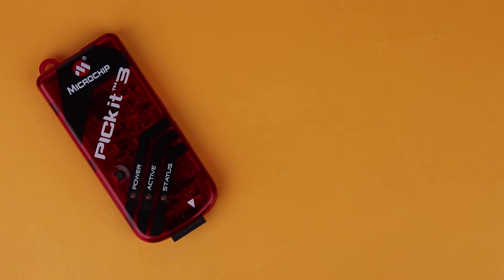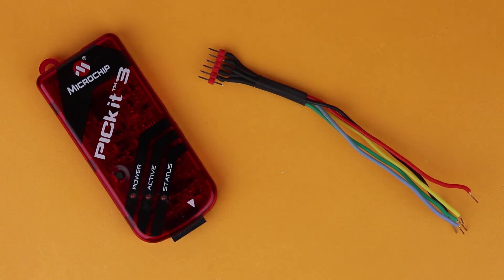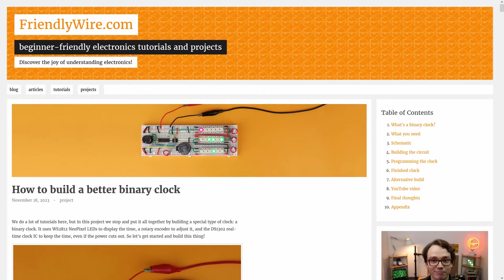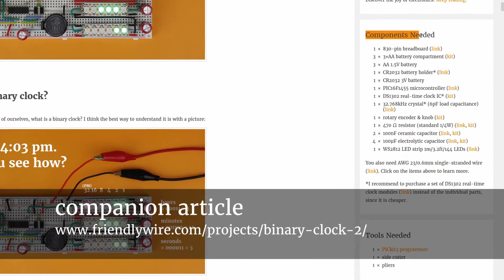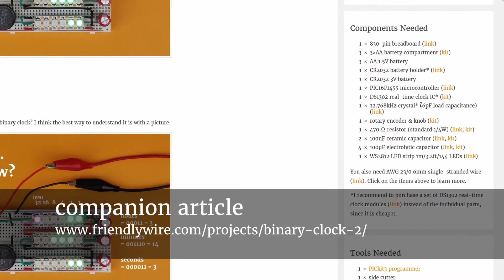And to program our microcontroller we need the PICkit3 with the usual five terminal connecting cable. All of these components plus links where you can buy them are listed in detail on the right-hand side of the companion article that you can find on FriendlyWire.com, the link is in the description.